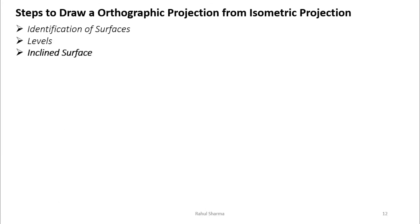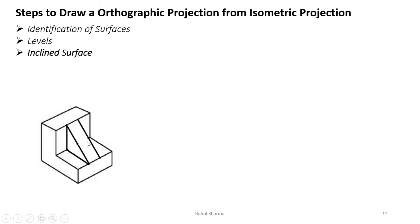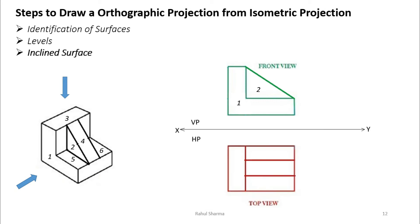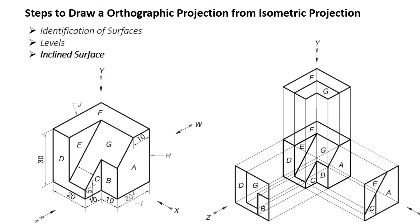For inclined surfaces, say the object has one inclined surface. From the front view direction, you identify surfaces one and two — both appear on the same level. From the top view you see surfaces three, four, five, and six. The inclined surface four appears between surfaces five and six but with reduced dimensions. An inclined surface is visible in multiple views — both top view and side view — always with reduced dimensions.